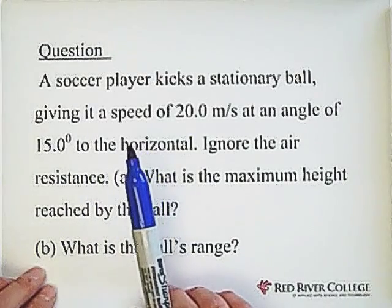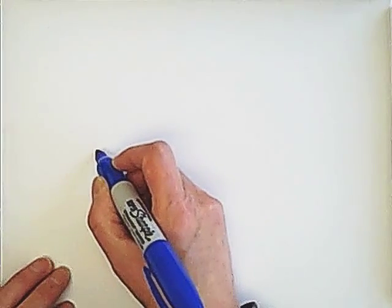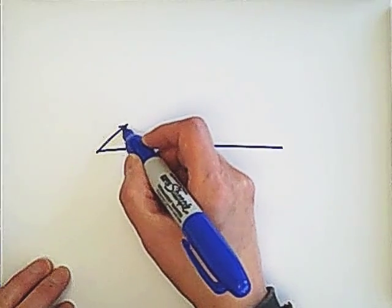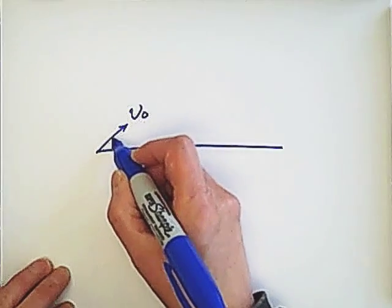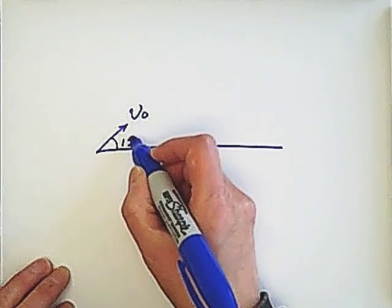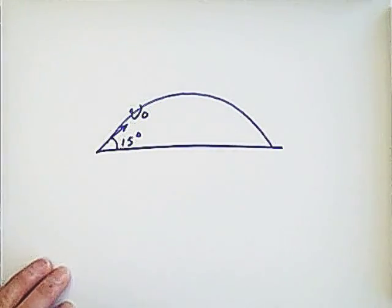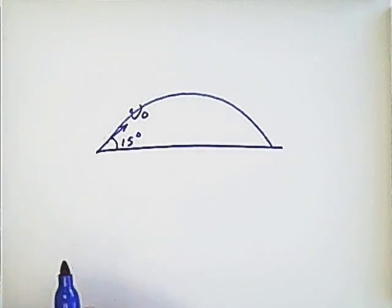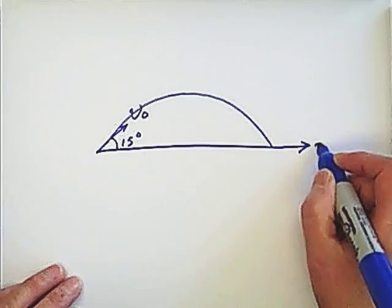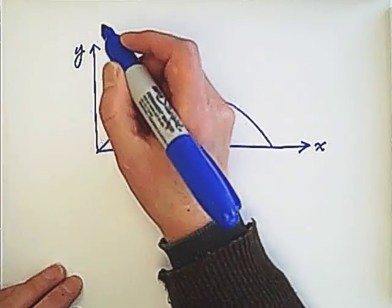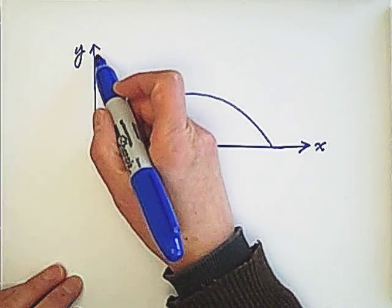So that's why this is a projection at an angle. We need the initial velocity given, 20 m/s, and the 15 degree angle of projection. We set the x direction as horizontal and upward as the y direction, so upward is positive.